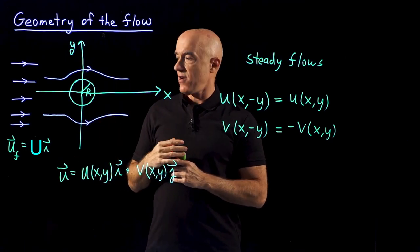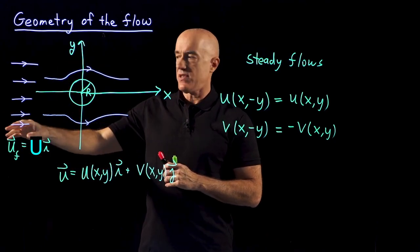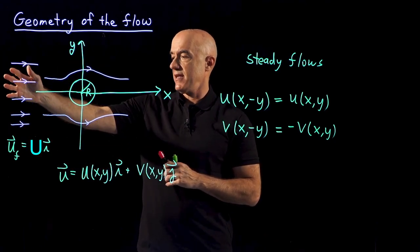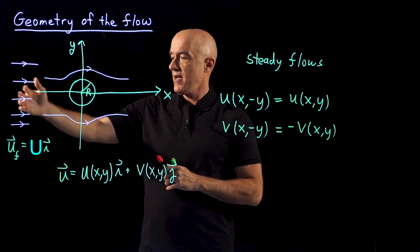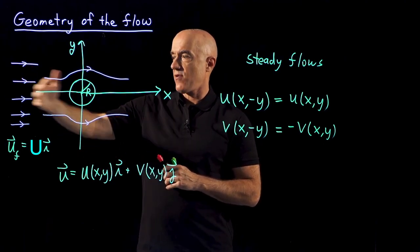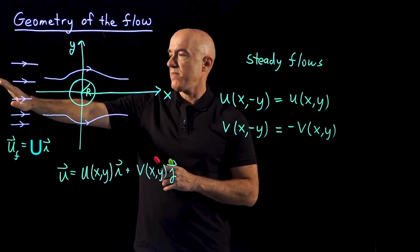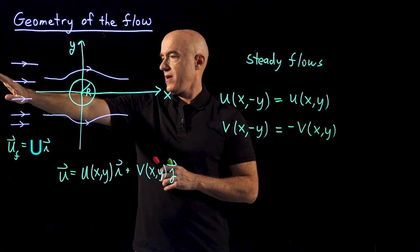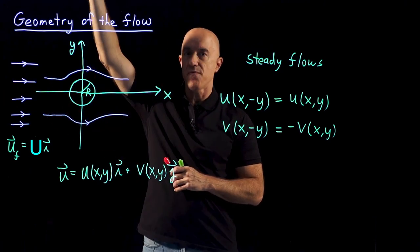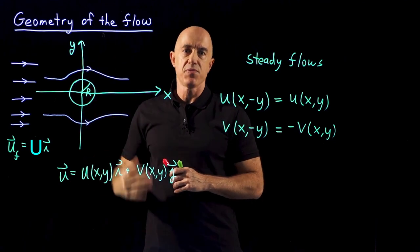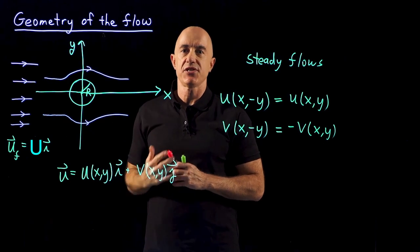I introduced the idea of a free stream velocity where far away from the cylinder the velocity is flowing with my definition of the x coordinate only in the x direction with constant velocity. So that will be true far in front of the cylinder, far behind the cylinder, far above the cylinder, and far below the cylinder. The velocity will satisfy the free stream condition.